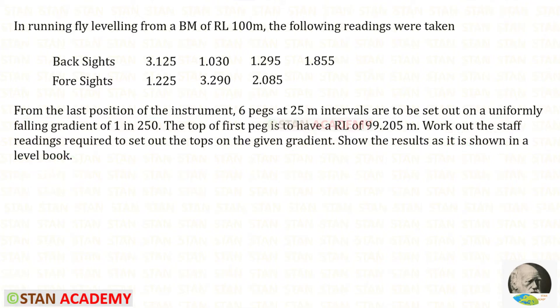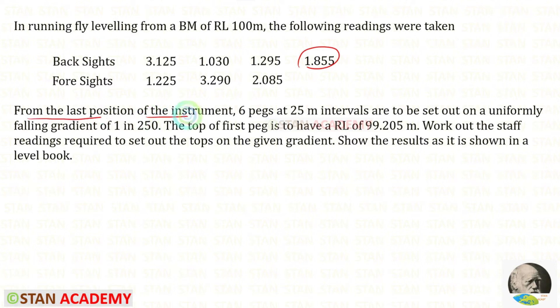There are four backsights given in the question, so there should be four foresights, but there are only three foresights. So after the last backsight, some readings are missing. From the last position of the instrument, six pegs at 25 meter intervals are to be set out, so after this backsight there should be six readings.